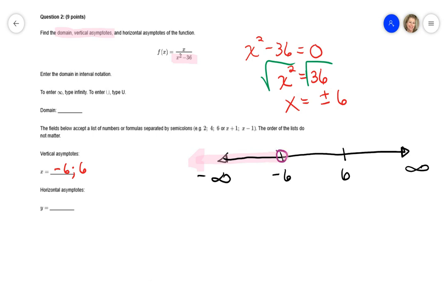And then from negative 6 up to the positive 6, and then an open circle there. And then from 6 to infinity. Now, that's actually three separate intervals.